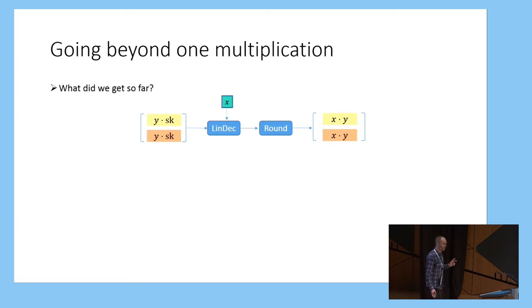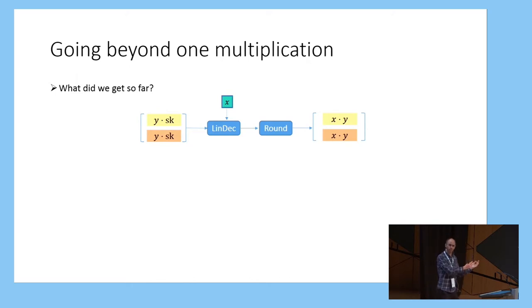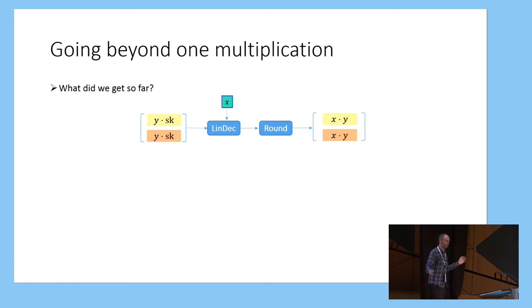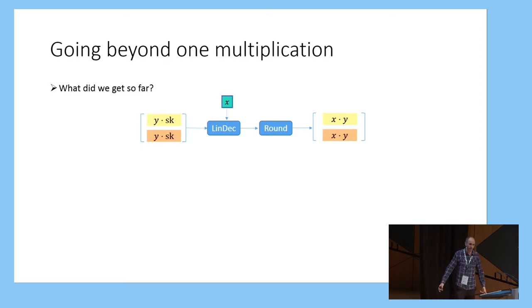Putting these two things together so far, we have a multiplication procedure which takes as input a pair of memory values — secret shares of the value y multiplied by the secret key — and an input value which is a ciphertext encrypting x known to both parties. They apply the linear decryption function and the rounding function and end up with secret shares of x times y.